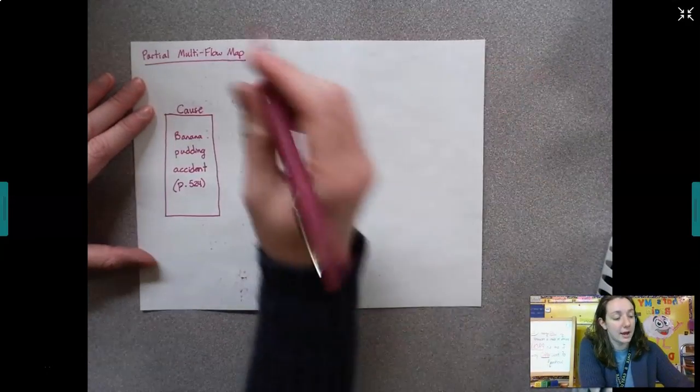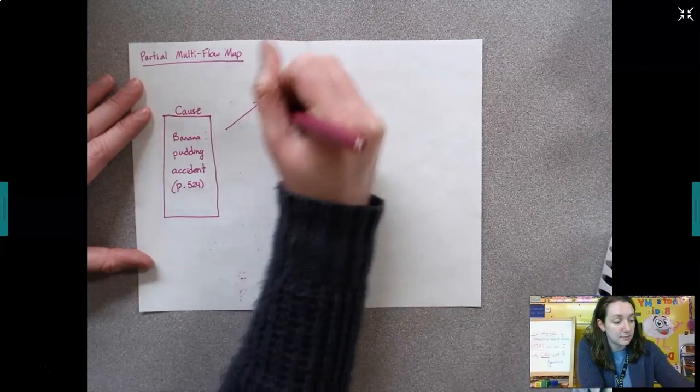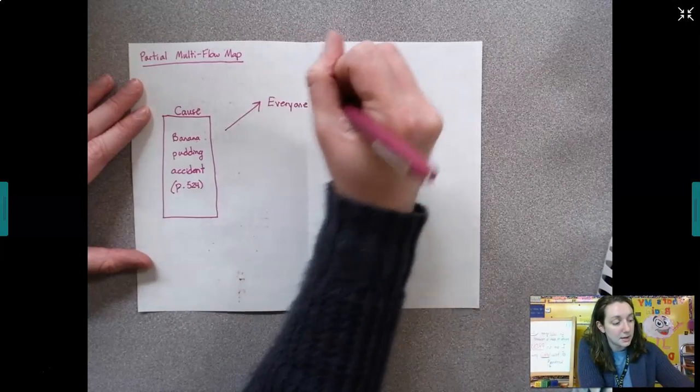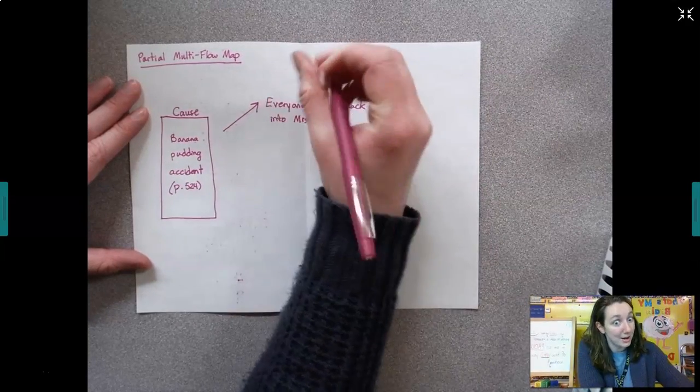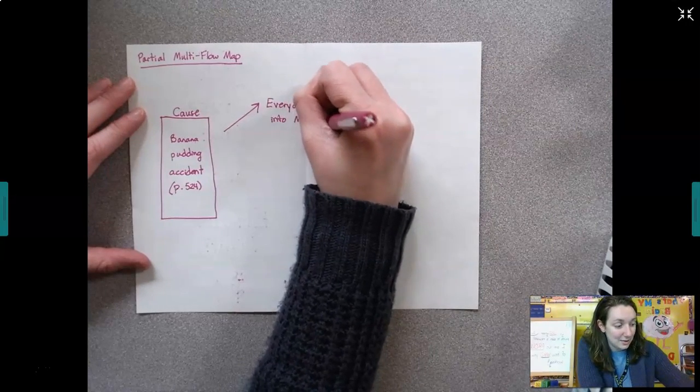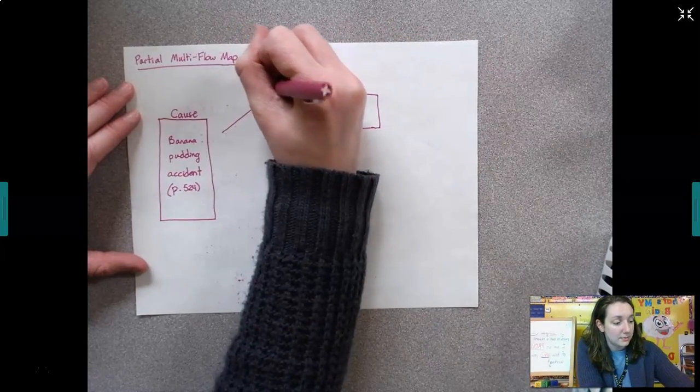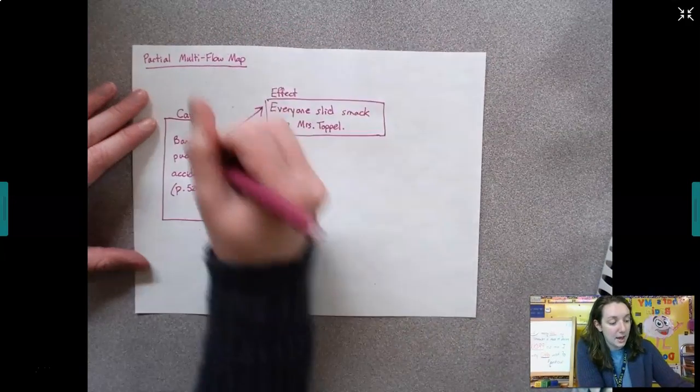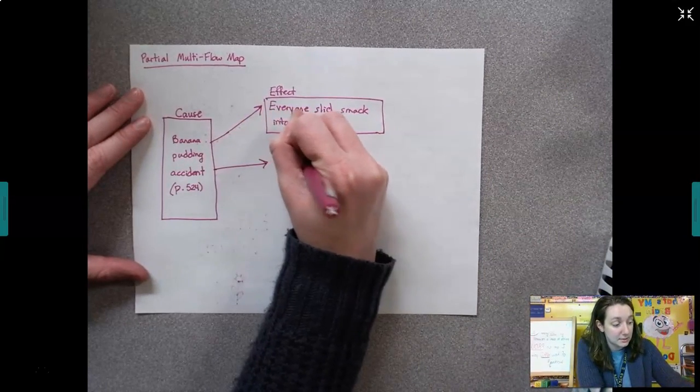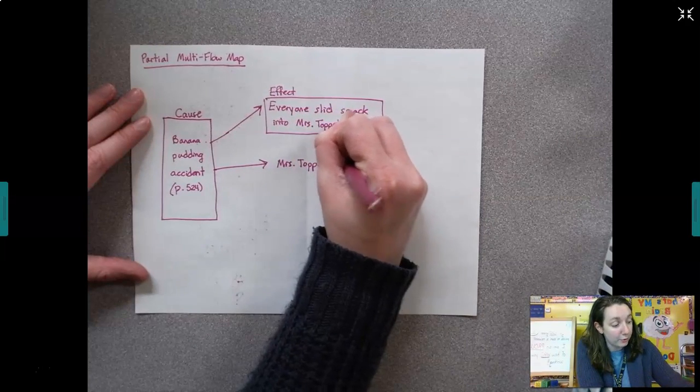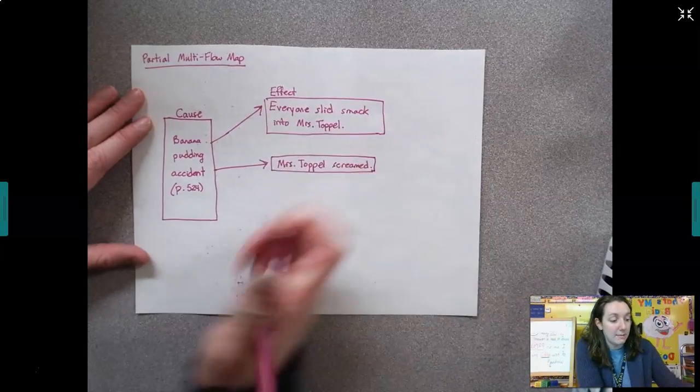A lot of effects happened, right? So let's think about effects that happened. Well, everyone slid smack into Mrs. Topple. So remember, she was standing on her swivel chair, which was against one of the safety rules. So that's one effect. And these are all things I pulled from the text. You can look in the book and pull these effects. You can see that the cause was the banana pudding accident.